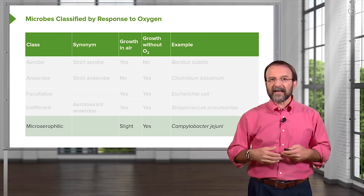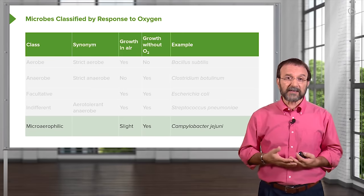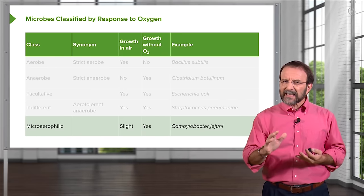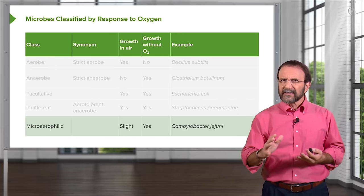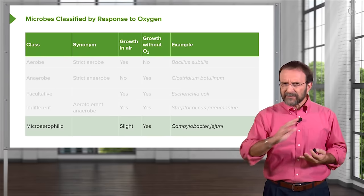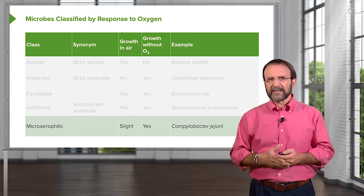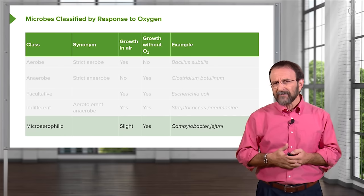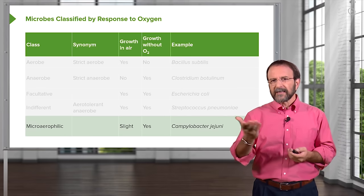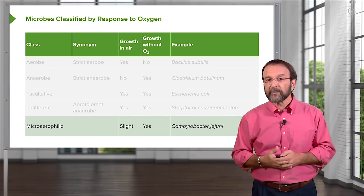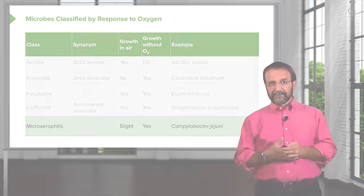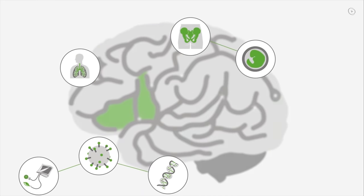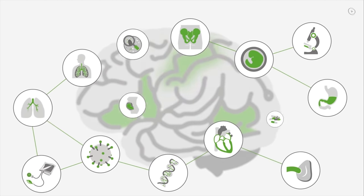And finally, we have what we call microaerophilic bacteria. These will grow a little bit in air, but they don't do so well. They do fine without oxygen — they'd rather not have air present, but if they happen to have it, it won't inhibit their growth. An example is Campylobacter jejuni.